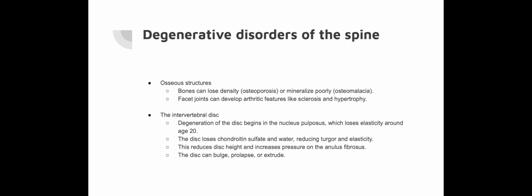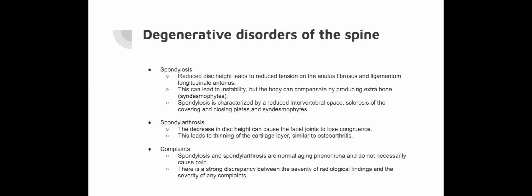Disc prolapse, also known as hernia nuclei pulposi, is more common in adults in their 20s and 30s. Research has shown that heavy labour or physical strain does not play a major role in the development of disc degeneration; instead, genetic and environmental factors are more likely causes. Spondylosis is characterised by reduced intervertebral height, sclerosis of the covering and closing plates, and the presence of syndesmophytes — newly created edge growths of bone at the attachment points of the annulus fibrosus and the anterior longitudinal ligament. These changes are often misinterpreted as wear and tear, but are actually a normal part of aging.